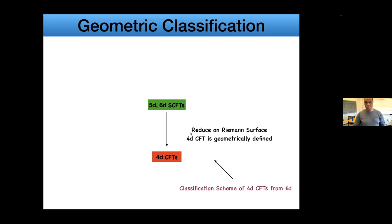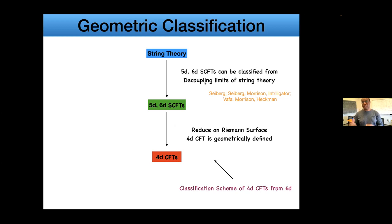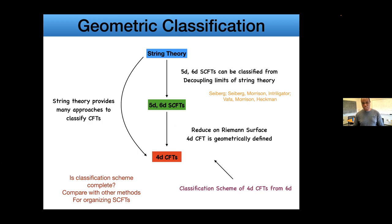The picture that emerged in trying to do a geometric classification is we can start with some 5D or 6D theories and reduce them to 4D similar to what I've just described. The 5D and 6D theories themselves may admit a classification directly from string theory. This chain allows you to have a classification of 4D theories. The question is: is this classification complete? Do you capture all possible strong dynamics that can occur, at least supersymmetrically? This is an interesting question and part of this will be to compare with several other methods.